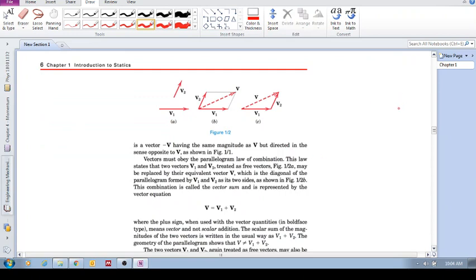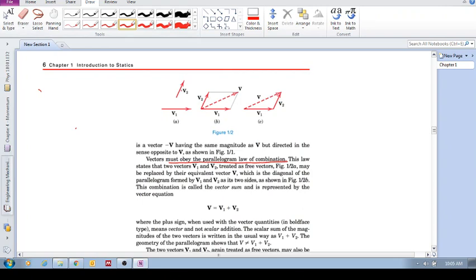So, we've already discussed this. The direction of the vector may be measured by an angle, theta, from some known reference. Now, let's look at this. Vectors must obey the parallelogram law of combination. So, we've got two free vectors here. Remember, a free vector has a magnitude and a direction. But you can place it anywhere. It's a free vector.